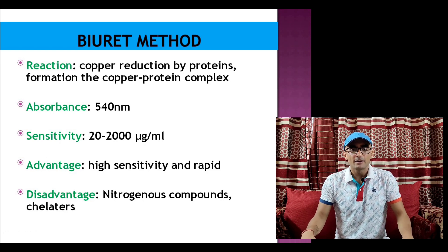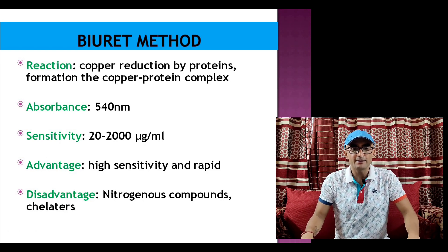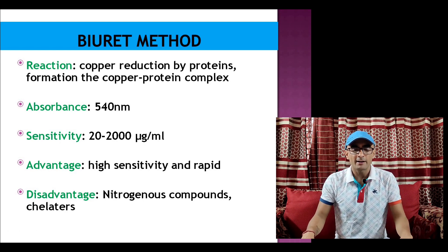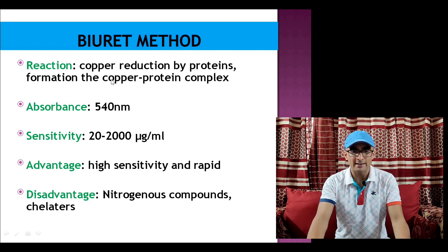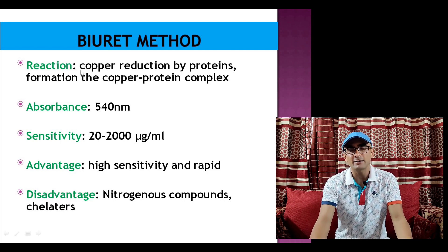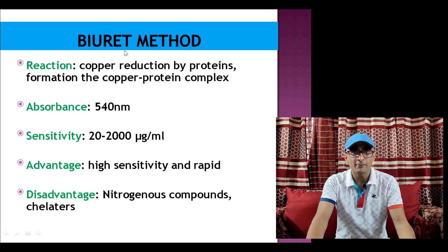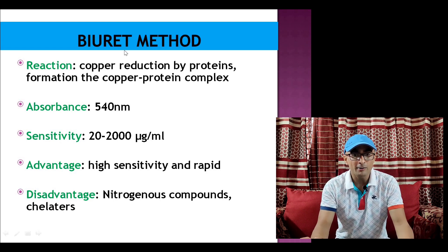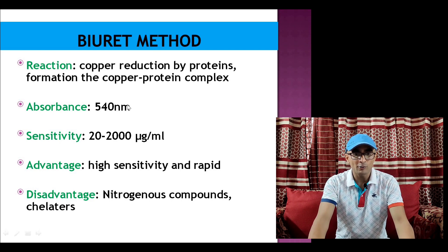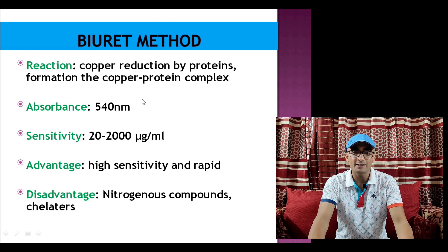This method is basically a reduction of protein peptide bonds by copper and formation of copper-protein complex. In alkaline condition, copper cupric ion reacts with the peptide bond in the protein and forms a colored complex that absorbs at 540 nanometer.